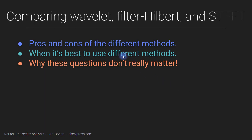So now you know about complex Morley wavelet convolution, you know about the filter-Hilbert method, and you know about the short-time FFT method. The question is, when should you use each of these methods for doing time-frequency analyses, how do they compare with each other, and is that even a useful question to ask? You can already guess that the answer to that final question is no, it doesn't really matter, but we have to talk about it anyway.